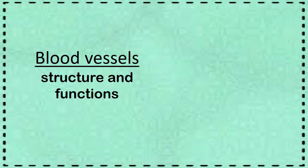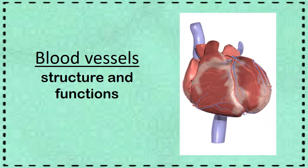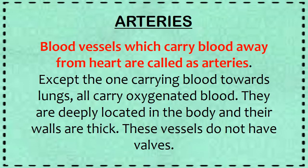Blood vessels — their structure and function. The heart is continuously beating, and due to this, blood continuously circulates throughout the blood vessels. There are two main types of blood vessels. The first one is arteries. Blood vessels which carry blood away from the heart are called arteries. Except for the one carrying blood towards the lungs, all arteries carry oxygenated blood, meaning the amount of oxygen in the blood is more.